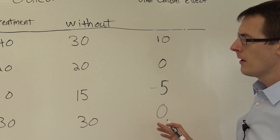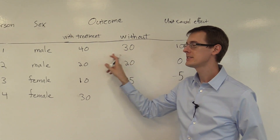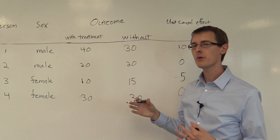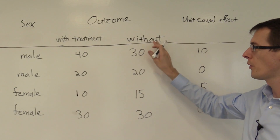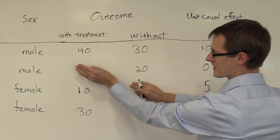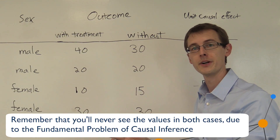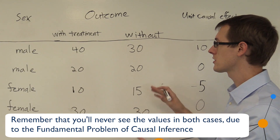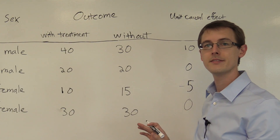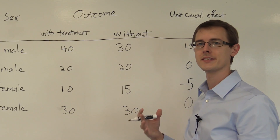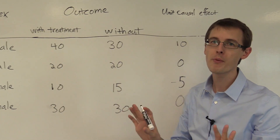Now remember, later on we're going to deal with the problem that in data, we never see both of these numbers for the same person, because each person can only either get treated or not get treated. So one of these numbers will always be hidden, depending on whether these people are treated or not. That's called the fundamental problem of causal inference, and it's going to make it really difficult because we won't be able to see the unit causal effects from the data.